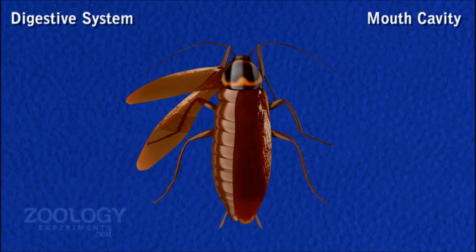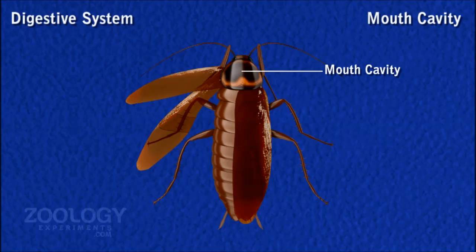Mouth Cavity. Mouth cavity is a small indefinable space outside the mouth, surrounded by mouth parts. The hypopharynx divides the pre-oral cavity into a posterior part called salivarium, into which the common salivary duct opens, and an anterior part which leads towards the mouth as a narrow food passage. Food is crushed and acted upon by salivary secretion in the mouth cavity.